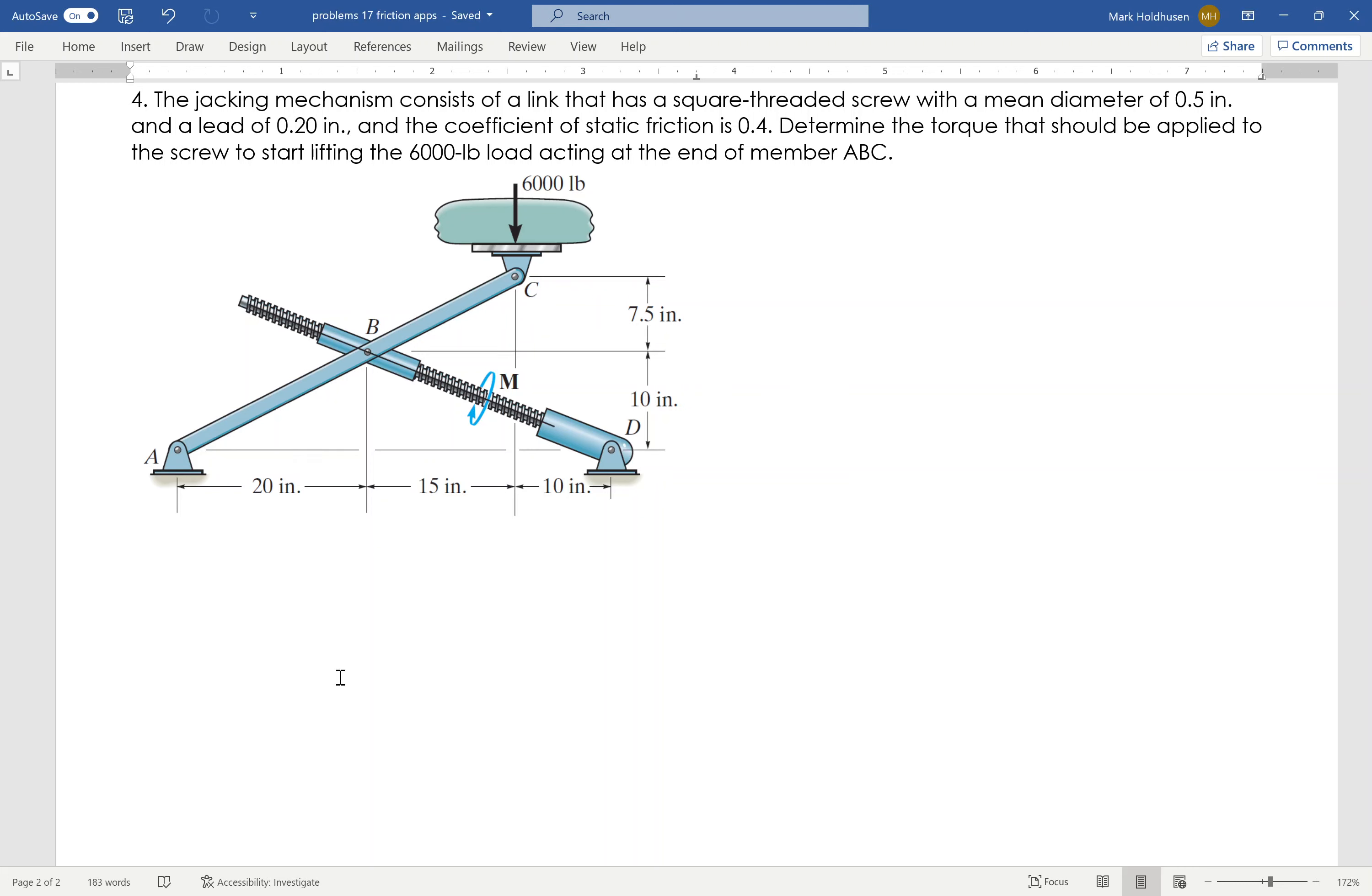Okay, so I got a jack here with a screw on it. It gives me the lead and the diameter there and the friction. I want to figure out how much torque or how much moment I need to apply to get this 6,000 pound load to move.